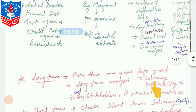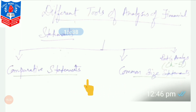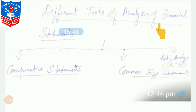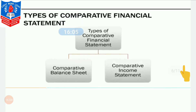Different tools of analysis of financial statements exist. There are different tools within our syllabus: one is the comparative statement, another is the common size statement — both of which we will do practically in Chapter 4. Ratio analysis is also a tool of financial statement analysis, which we will do in Chapter 5.